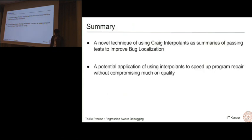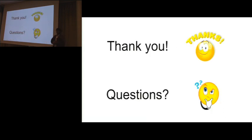In summary, we have presented a novel technique of using Craig interpolants as summaries of passing tests to improve bug localization. We do not disregard the passing tests as BugAssist does and we suggest a potential application of using interpolants to speed up program repair without compromising too much on quality. Thank you and like some questions.